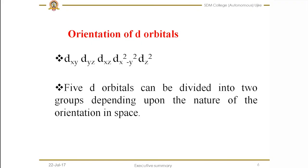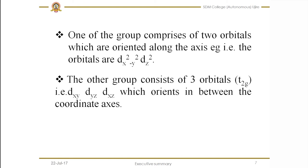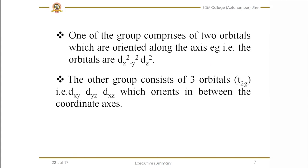The d sub-shell has 5 important d orbitals: dxy, dyz, dxz, dx²-y², and dz². These 5 d orbitals can be divided into two groups depending on the nature of their orientation in space. One group comprises two orbitals oriented along the axis, referred to as eg — these are dx²-y² and dz². These orbitals orient along the axis; for example, dz² orients along the z-axis, and dx²-y² orients along the x and y axes.